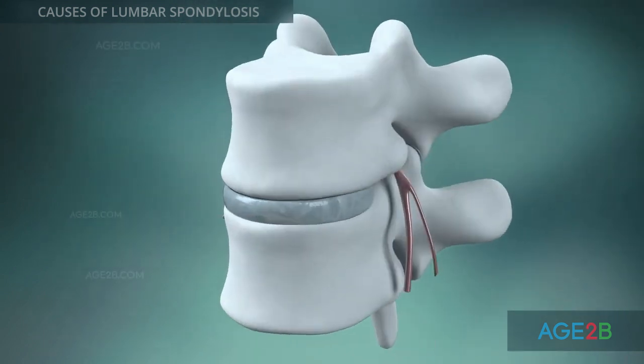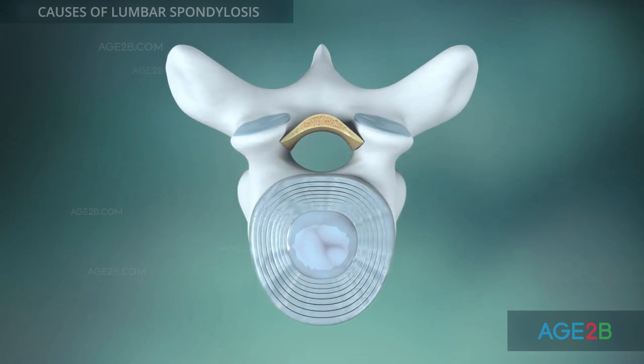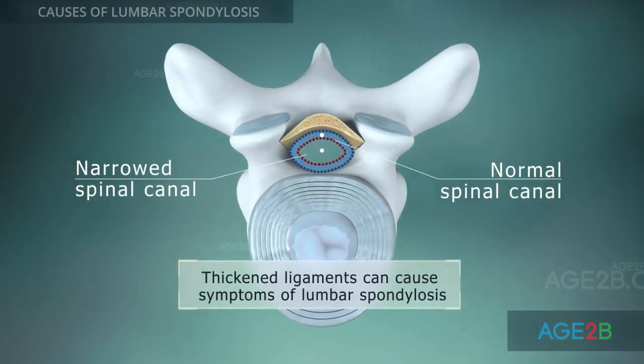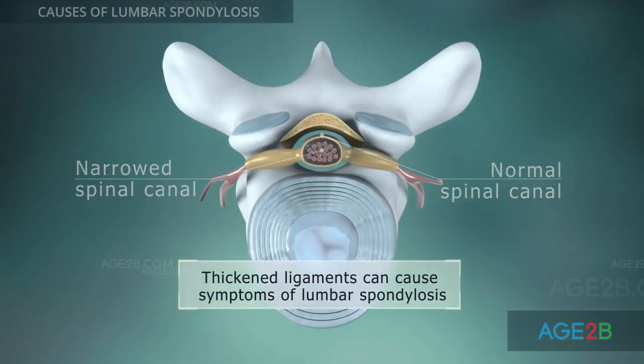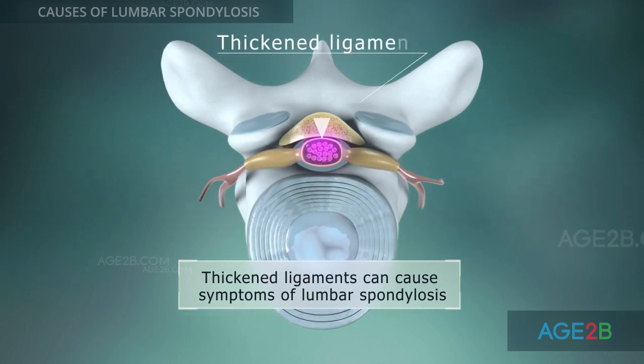With age, ligaments that bind the spine together become thickened and stiff. This condition can also cause symptoms of lumbar spondylosis.